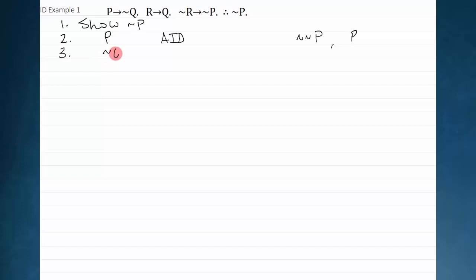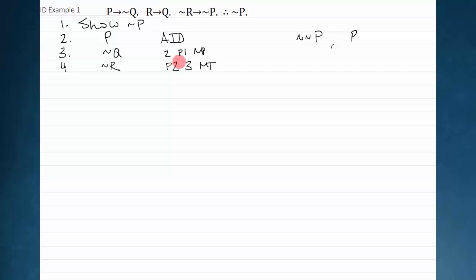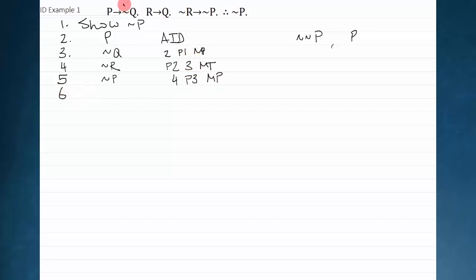P is the antecedent of P arrow not Q, so I just get not Q immediately from line two and premise one, modus ponens. This not Q obviously combines with premise two to get not R — because not Q is the negation of the consequent — so I can say premise two and line three, modus tollens. You'll notice sometimes I put the conditional as the first number, sometimes the negation of the consequent first. It doesn't matter, as long as you put both references in. Now I have not R, and I can clearly see a modus ponens: line four and premise three, modus ponens.